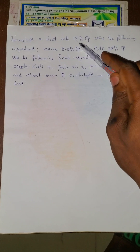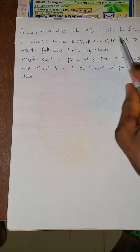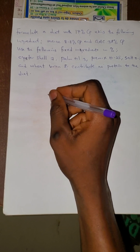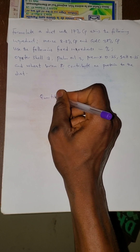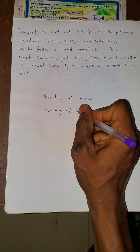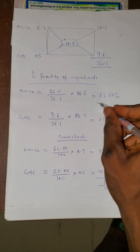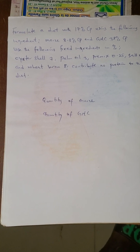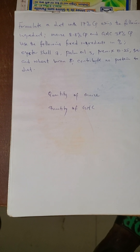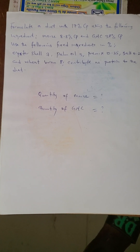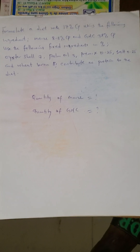Now take this as an exercise: formulate a diet with 70% CP using the following ingredients — Maize, GNC, and fixed ingredients that don't contribute protein to the diet. Let me have the answer at the comment section. The answer I want is: what is the quantity of Maize that will be mixed, and what is the quantity of GNC that will be mixed? Like, comment, subscribe, and share for other people to use. I am sure that you will be blessed. My name is popularly known as General David. Thank you very much, God bless.